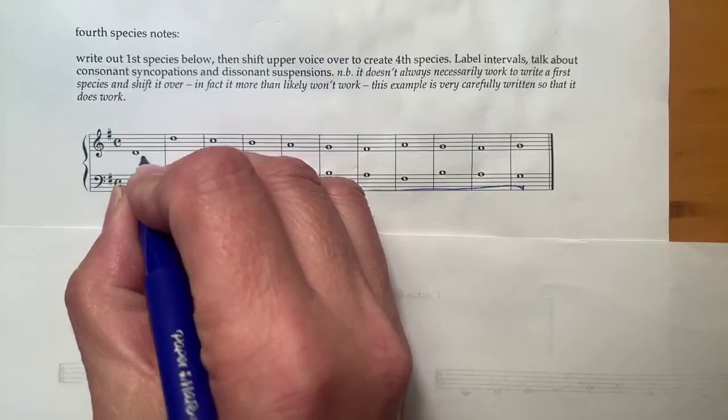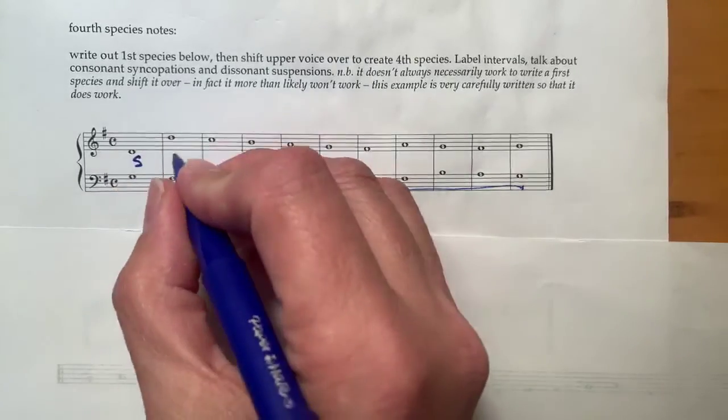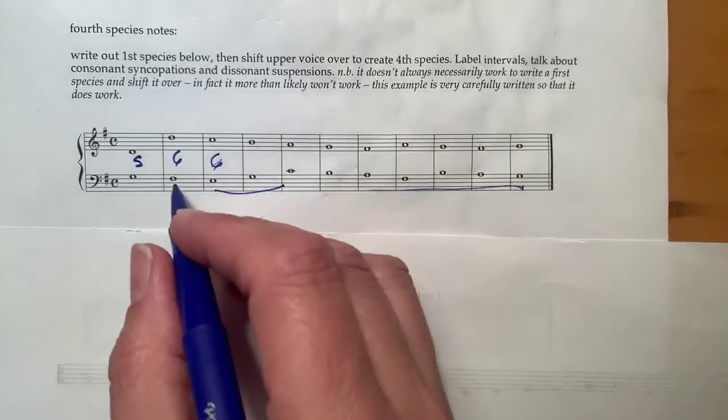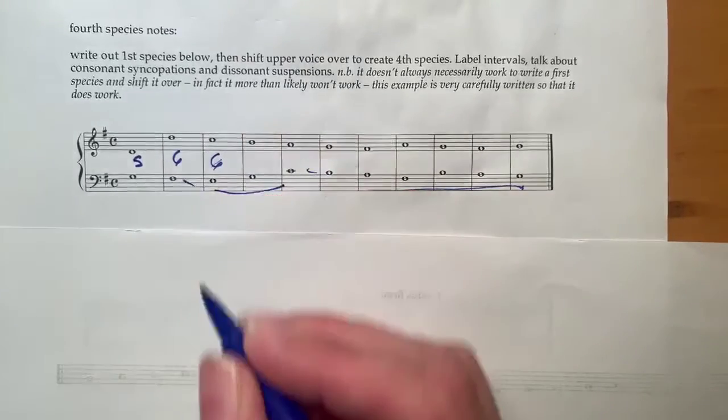We've got G to D is a fifth, six, six, we have a nice subdivided leap here. We go into it and out of it appropriately.